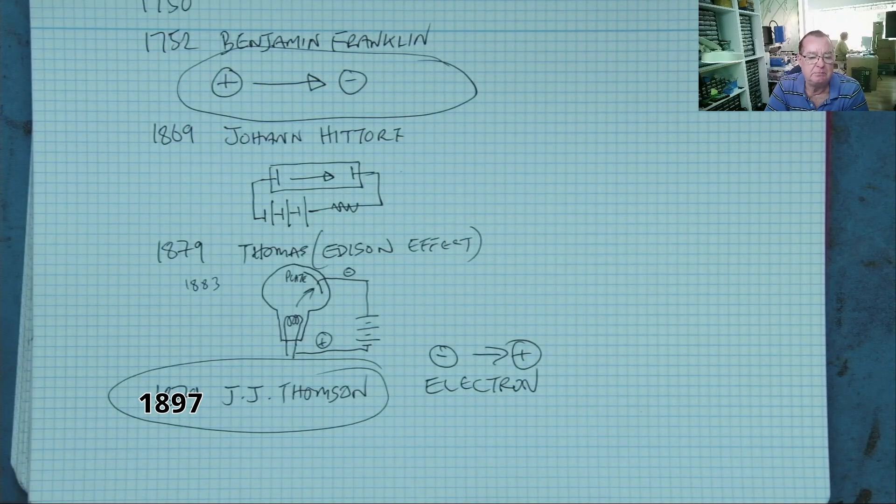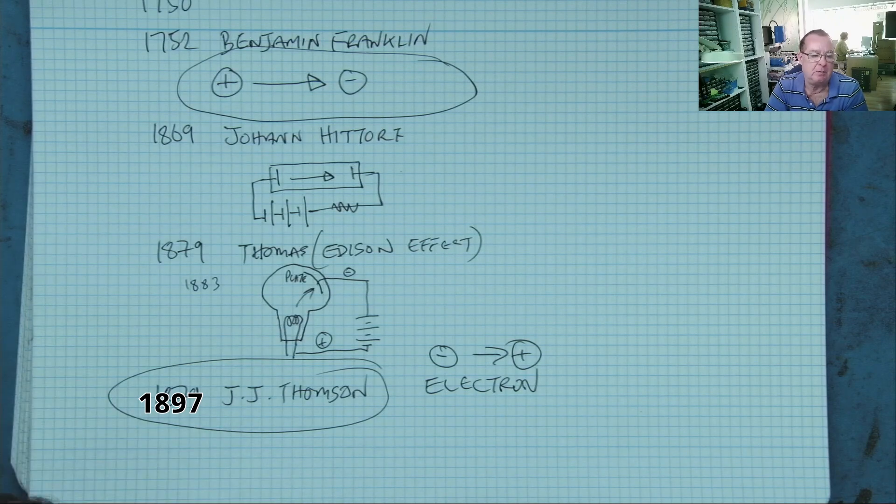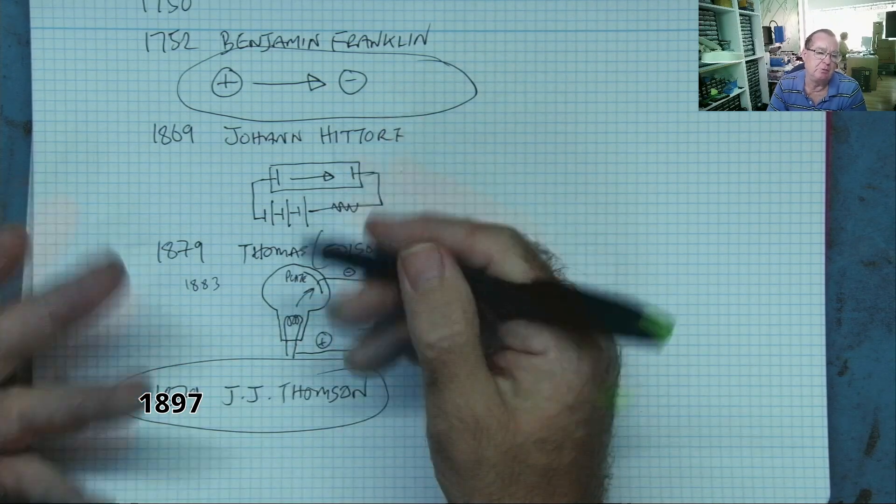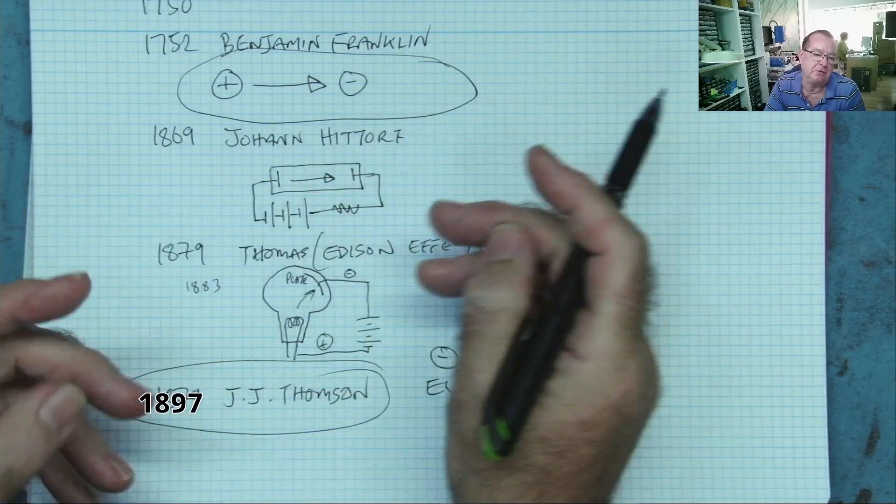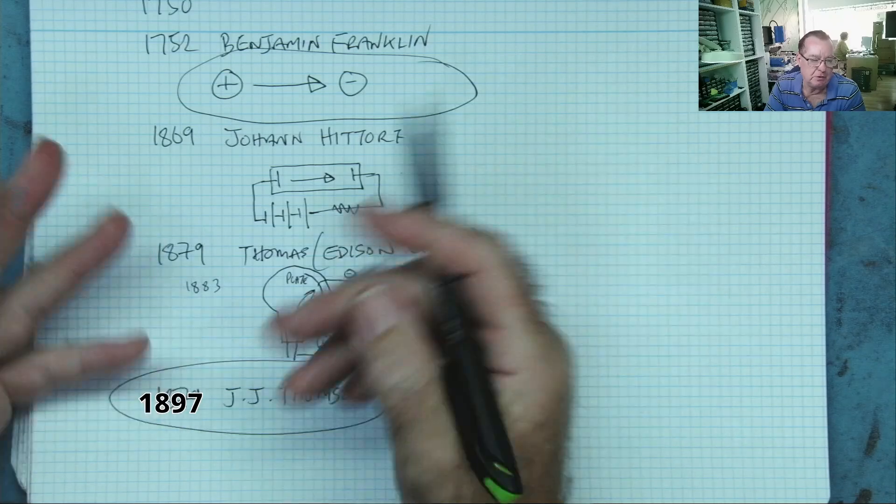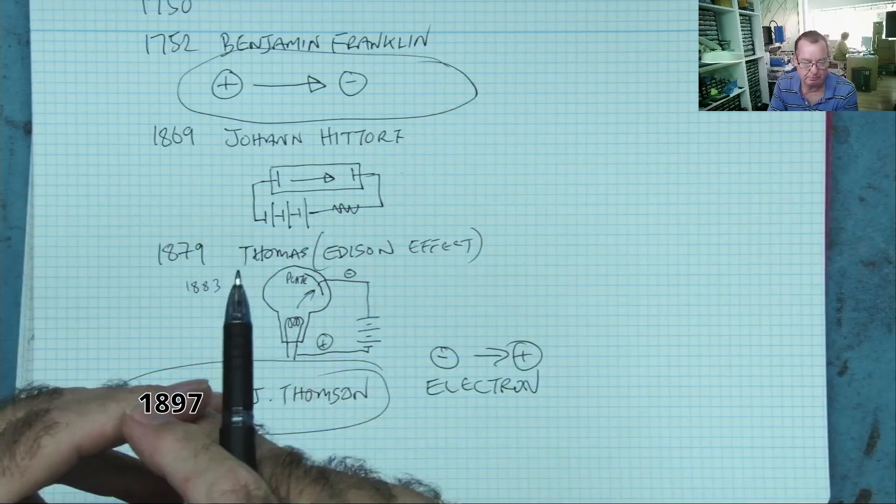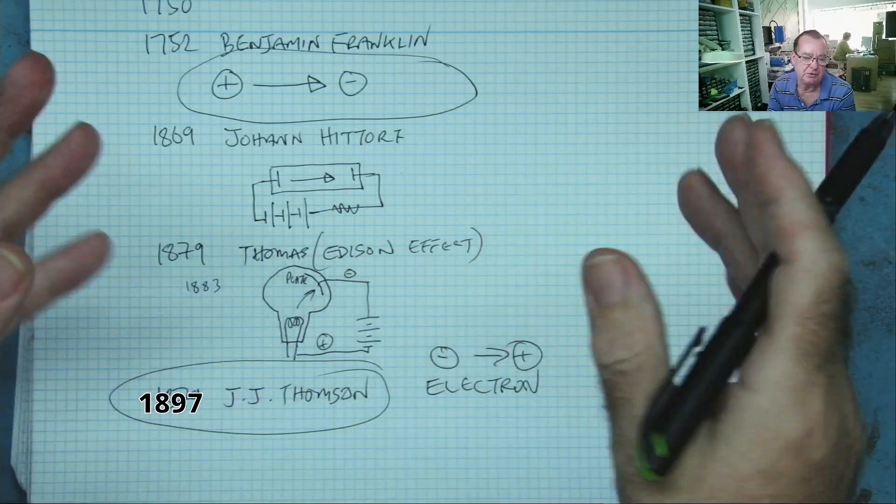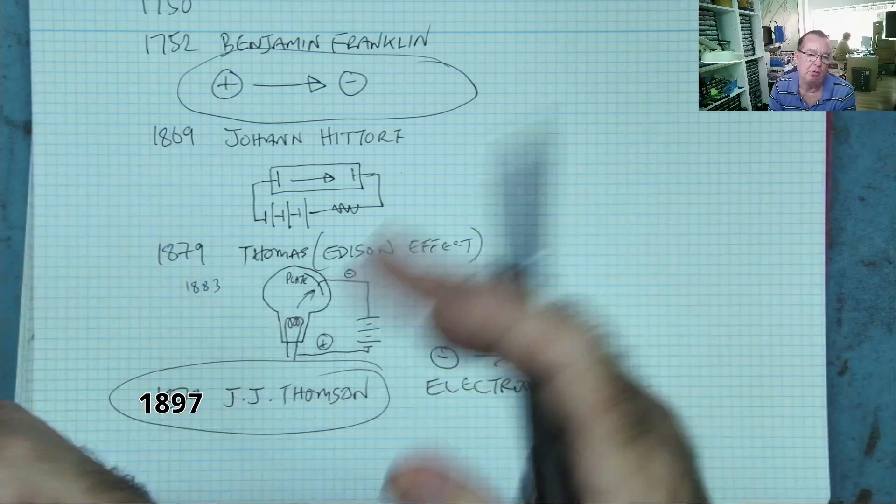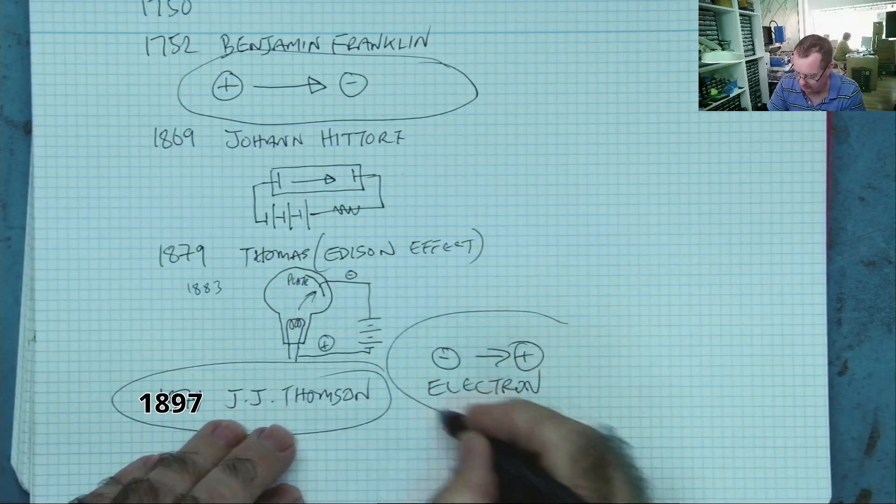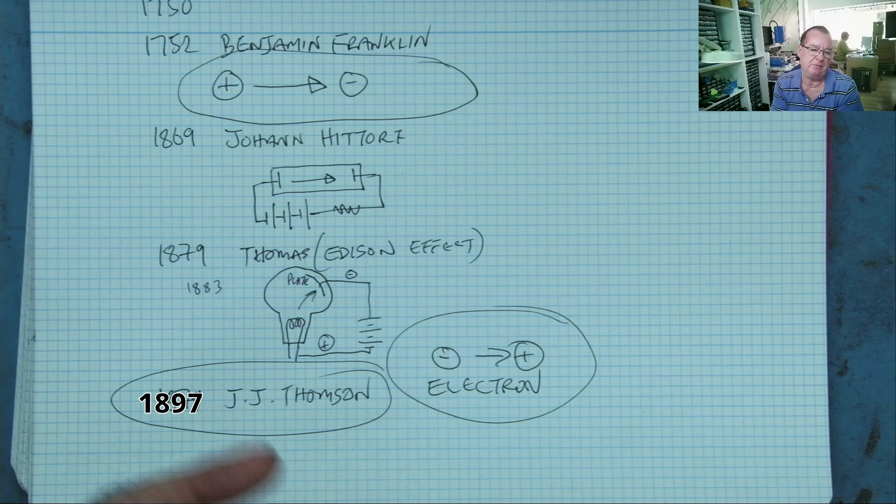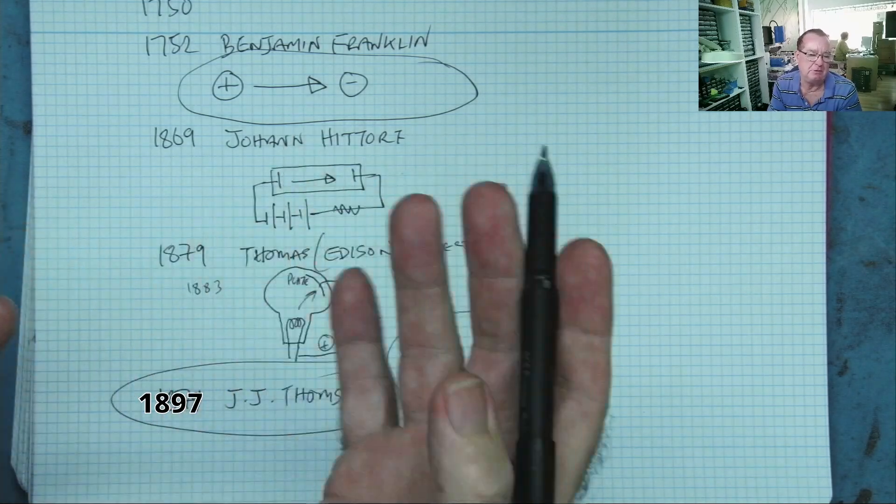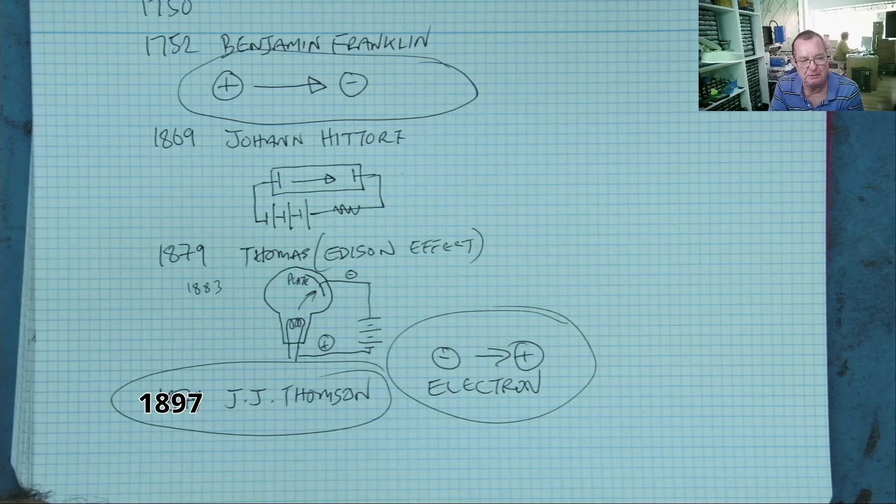The scientific community decided basically it would be much too much effort to rewrite all these books and reverse all the polarities and change all the university courses and all the lecturers and all the engineers and everybody else and get them to all agree that the flow is this way. So the best thing to do is just to leave it the way it is, because in most realistic scenarios it doesn't actually matter which way it's flowing.